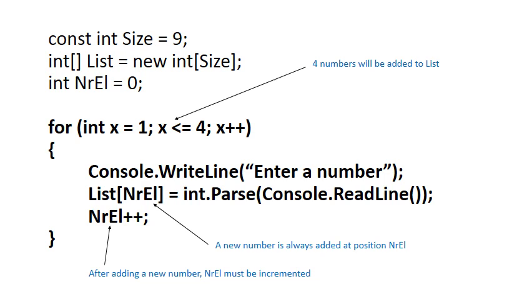Notice that whenever the user enters a new number we say list[NrEl] is assigned to int.Parse. As we discussed in the previous slides the new element always goes to position number of elements because the last element is always at position number of elements minus one.